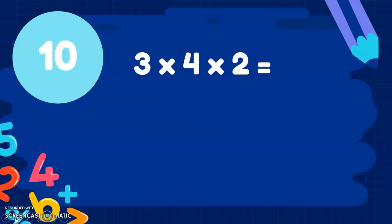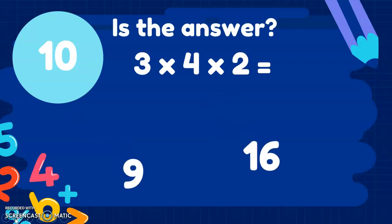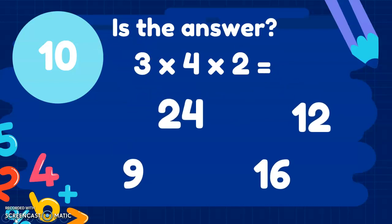Here's our last question. 3 times 4 times 2. Wow, this is hard. Two multiplications. Have a little go. Is the answer 9, 16, 12 or 24? It's not 9. It's not 16. And it's not 12. 12 is part of the answer though. 3 times 4 is 12. But then we have to times that 12 by 2. Two different multiplications. And 12 times 2 is 24. Absolutely amazing if you got that right.